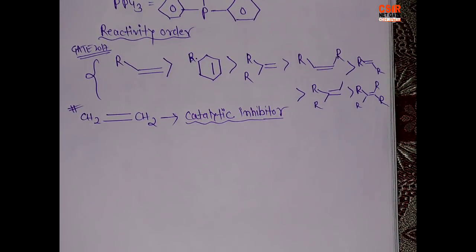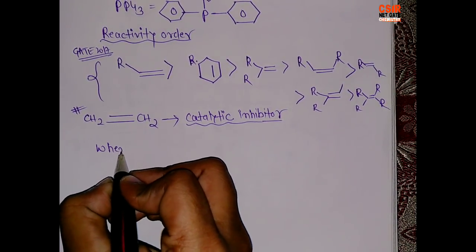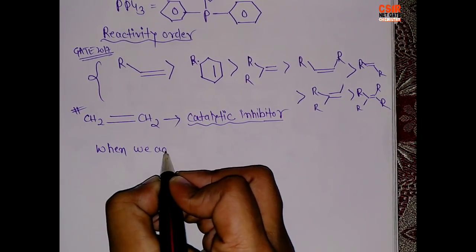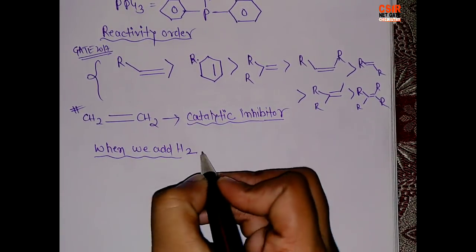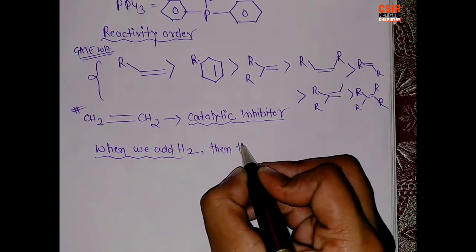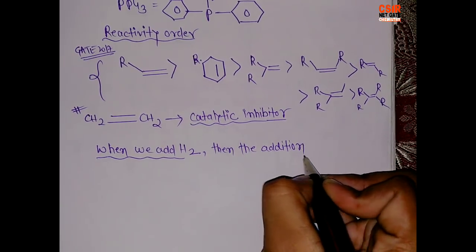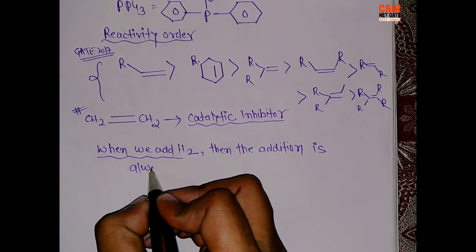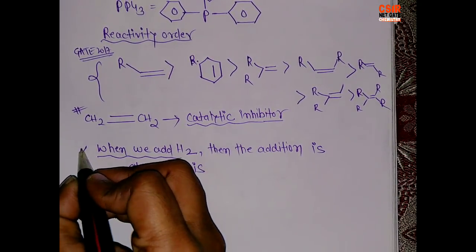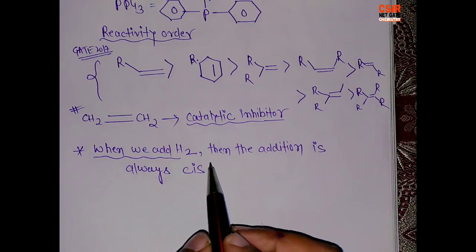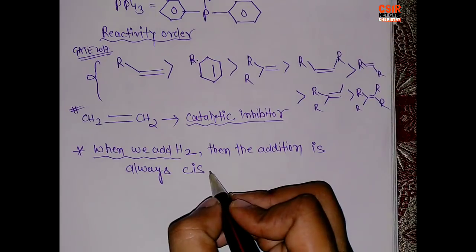Now coming to the next point. When we add hydrogen, then the addition is always cis. This is the most important point. The addition of H2 is cis on the Wilkinson catalyst. It won't be trans, because H2 is non-polar.